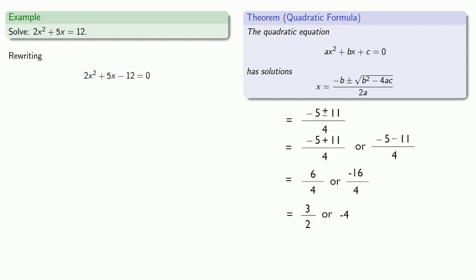And remember, if it's not written down, it didn't happen. We can summarize what we did. We used the quadratic formula, we filled in our values, and we got 3 halves or negative 4.